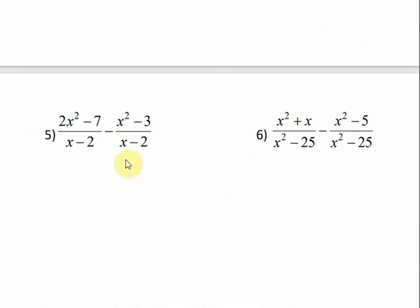This is my binomial in the first rational expression, and this is the one in the second rational expression. Since this is subtraction, I'm going to rewrite this. My denominator is x minus 2. And then this is going to stay the same, because there's no sign in front. So this is 2x minus 7.